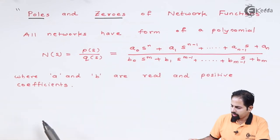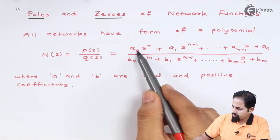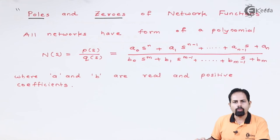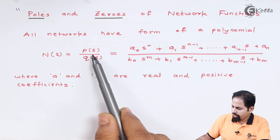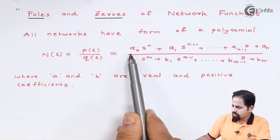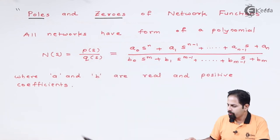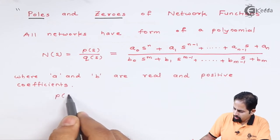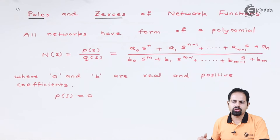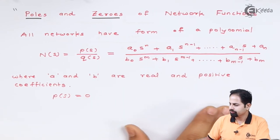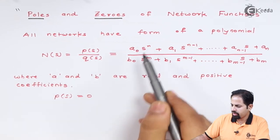Now what we can do here? We can take this a and b common. Here a common, here this b also common. Now what we can do is suppose this P(s) is 0, then it will have certain roots because it has a polynomial of this order, a particular order suppose n order.